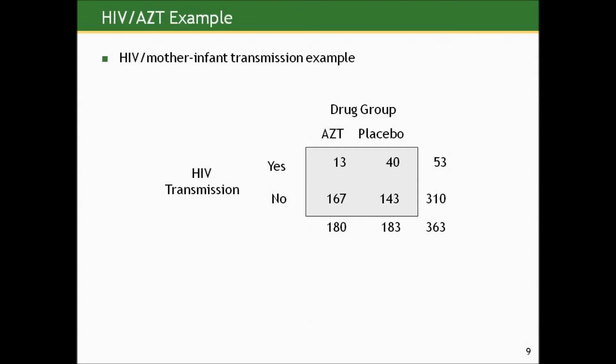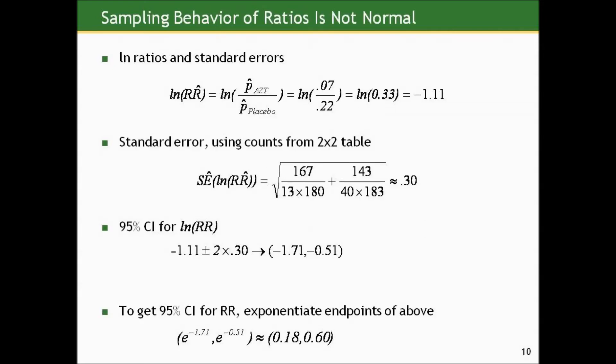And we'll go back to the HIV mother-infant transmission example that we've worked with throughout this series of lectures. And this is the 2x2 table setup we use for this. 180 HIV positive mothers given AZT during pregnancy and 183 given placebo.